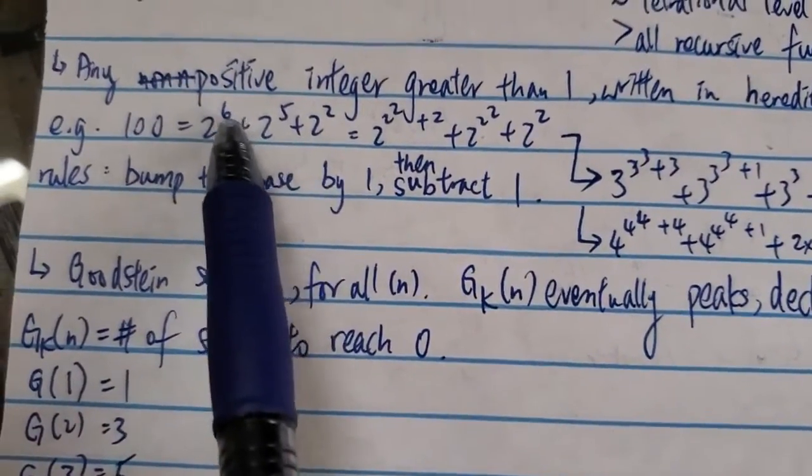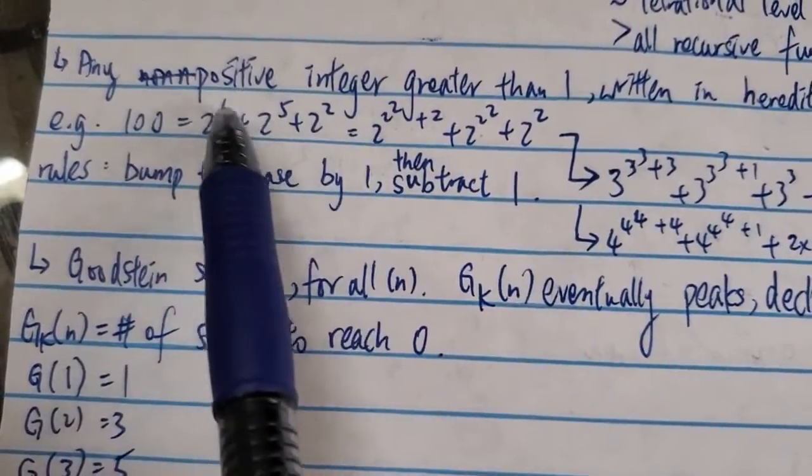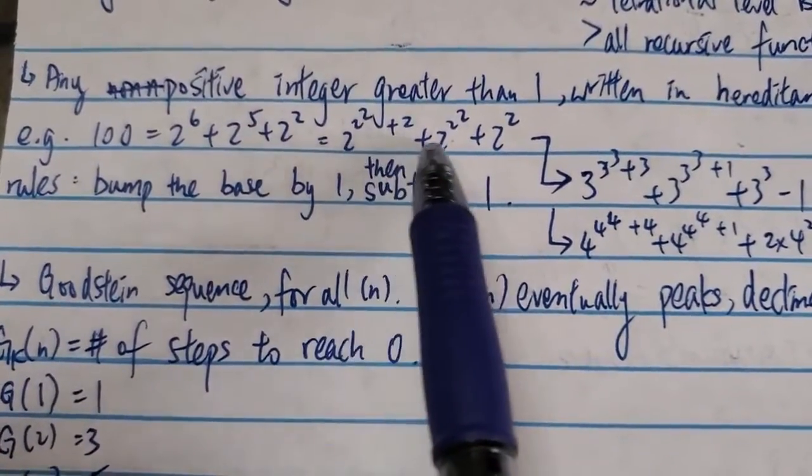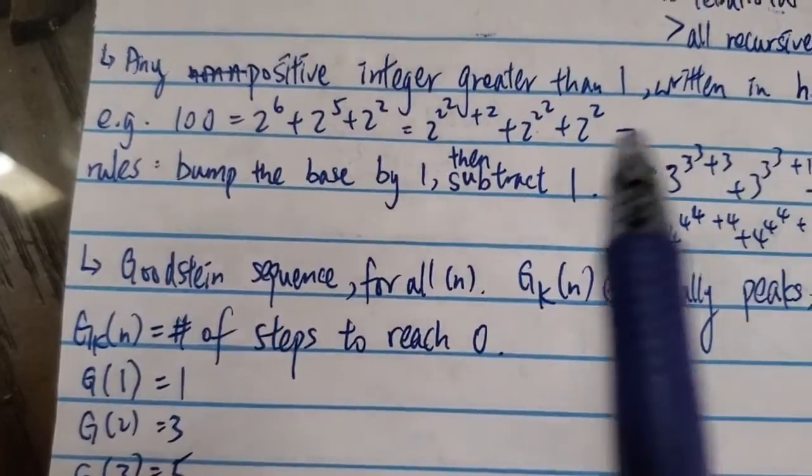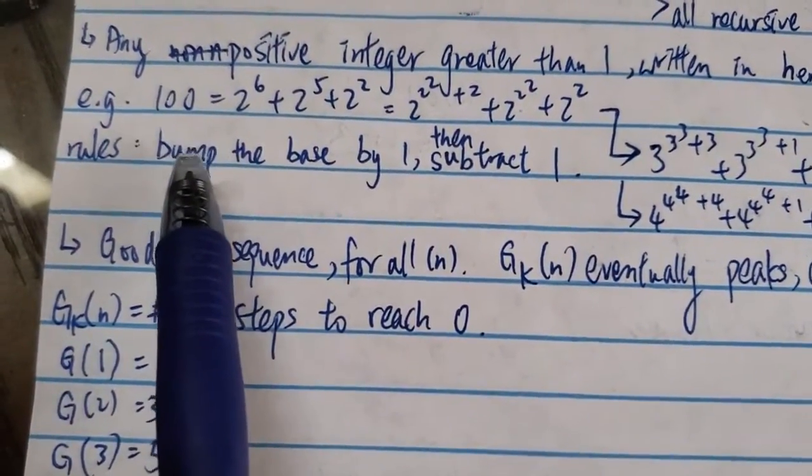The number 100 can be written this way in base 2. But you have to change the numbers to 2, so the 6, 5, therefore it becomes this thing over here. And the rules, what are the rules for the Goodstein sequence? So basically for the next step, you have this thing over here, you convert this number 100 to base 2.